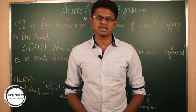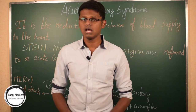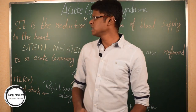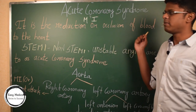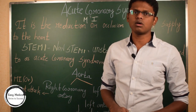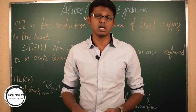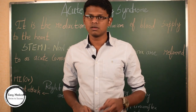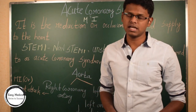First of all, let's discuss about the definition of acute coronary syndrome. Acute coronary syndrome is defined as the reduction or occlusion of blood supply to the heart. When there occurs blockage of blood supply to the heart, that causes acute coronary syndrome. It comprises three factors which are unstable angina, STEMI and non-STEMI.